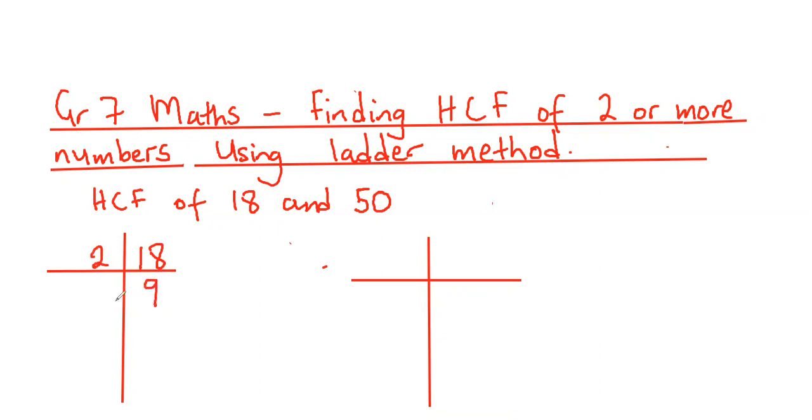2 can no longer divide into 9 without leaving a remainder, so we move on to the next prime factor, which is 3. 3 into 9 is 3. And 3 divides into 3 to give us 1. When we get 1, we stop.